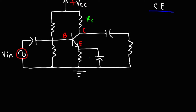This is RC. That's RE, the emitter resistance. R1 and R2 form a voltage divider. C1 and C2 are used to block DC signals but allow AC to pass into and out of the circuit. CB is the bypass capacitor — it bypasses the emitter resistor, allowing the AC signal to bypass RE. And RL is the load resistor.